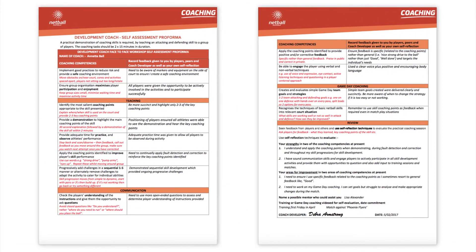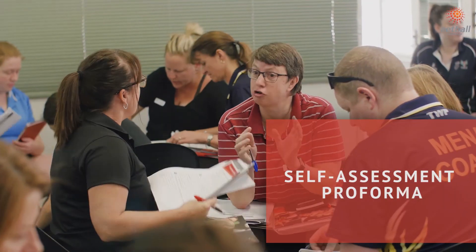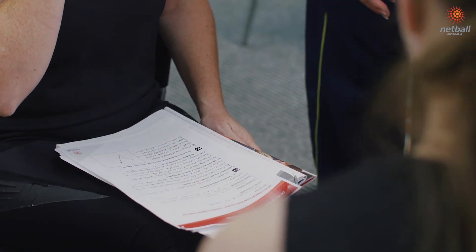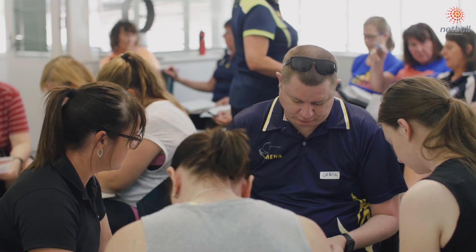Throughout the workshop, coaches complete a self-assessment pro forma based on the feedback they receive from the coach developer and peers. It's about you realising the things that you need to improve on, or acknowledging some of the things that you're good at. The self-assessment incorporates the coaching competencies for the development level coach. It is an important process as it enables coaches to fully understand each competency and to identify their strengths and areas for continued development to work on with a mentor following the course.